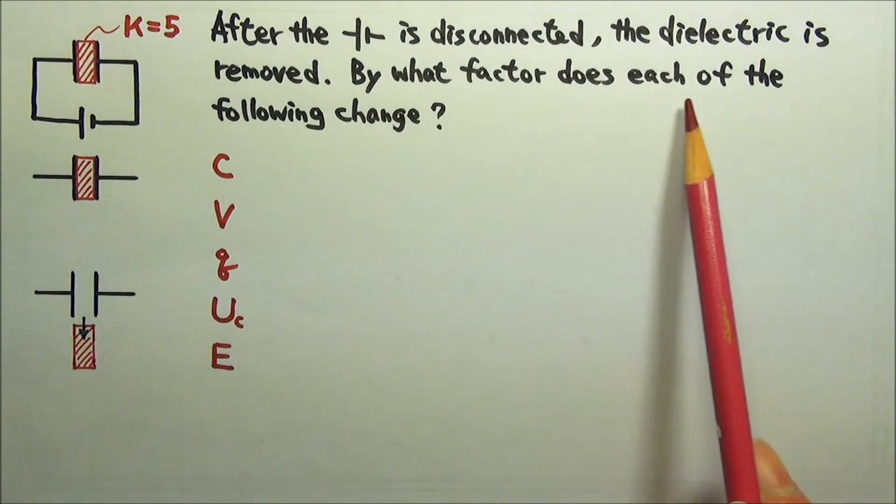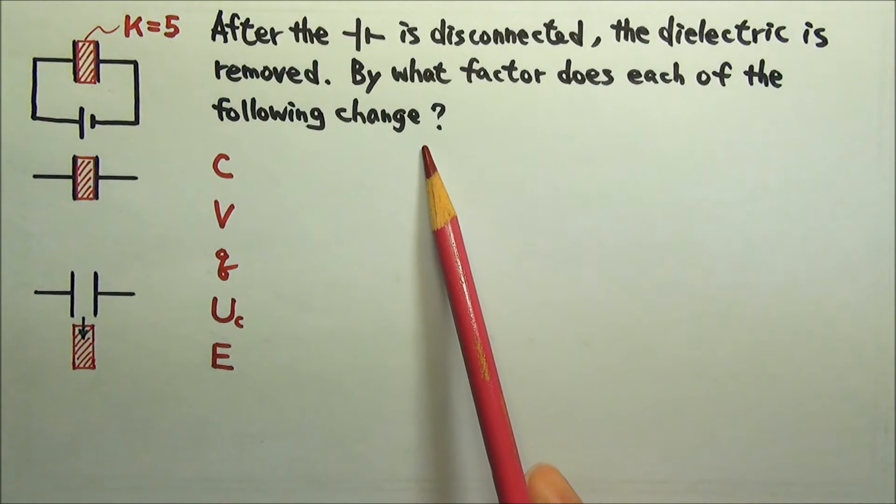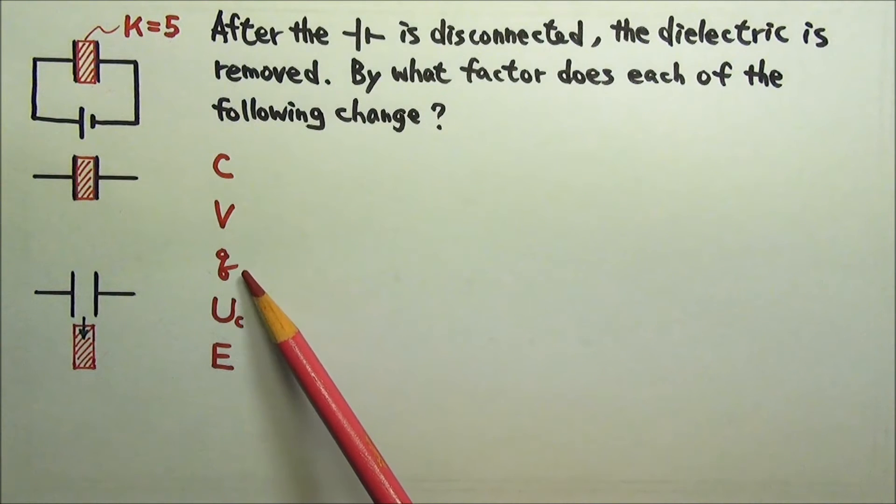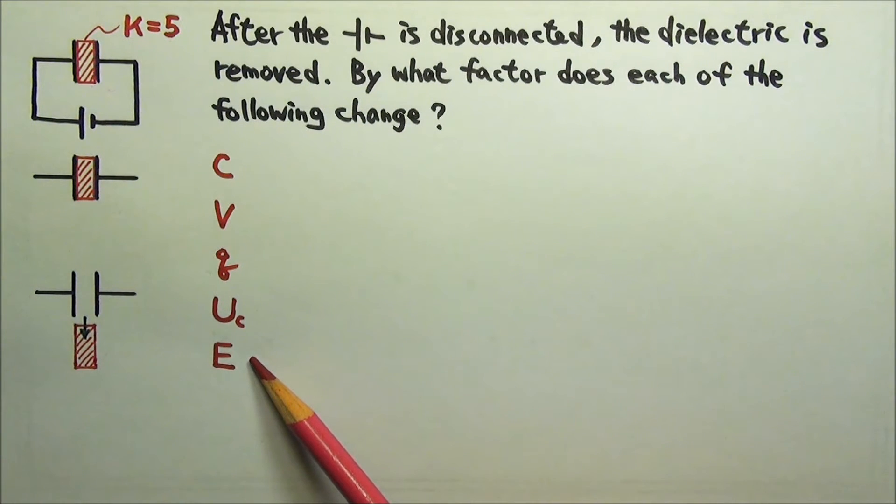By what factor does each of the following change? The capacitance, the voltage across the capacitor, the charge on each plate of the capacitor, the potential energy stored in the capacitor, and the electric field between the plates.